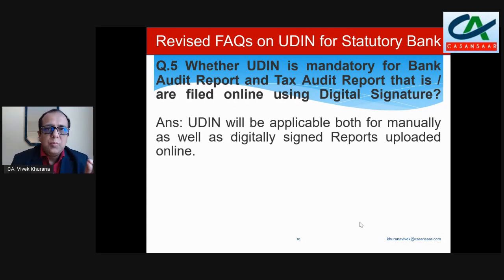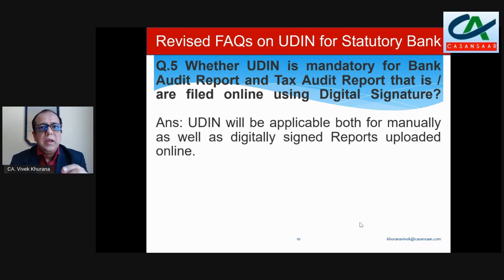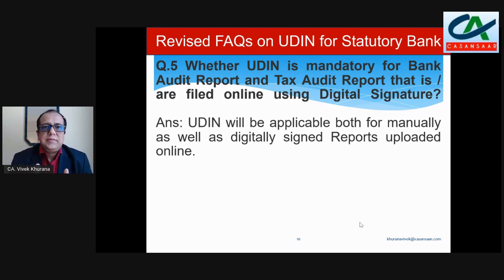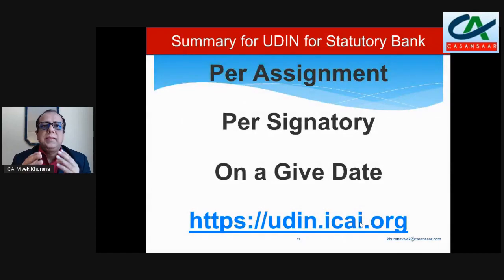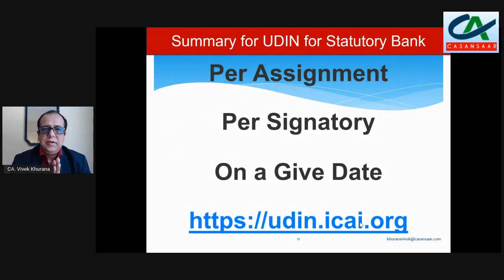The previous FAQs have no changes. The only change is in the case of MOC: if there is any MOC in that branch, you have to mention it in the UDIN, and that is a mandatory clause. Regarding the date — this update was on 12th April. If you had already signed before 12th April, no issue. But after 12th April you have to mention the MOC. UDIN for bank branch audit is per assignment per signatory on a given date.